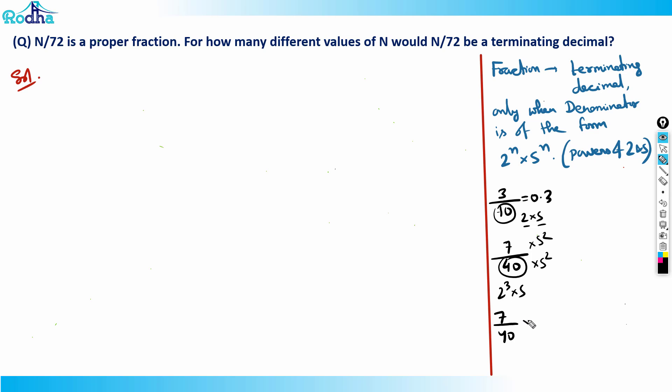So we had 7/40. I can multiply by 5² in numerator and denominator. So 40 × 5² becomes 1000, and 7 × 5² becomes 175. So it's 0.175. It's a terminating decimal.